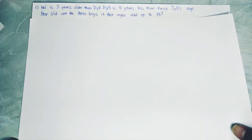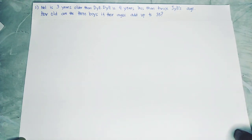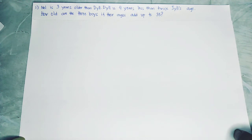Our problem is here. Neil is 3 years older than Dil. Dil is 4 years less than twice Dil's age. How old are the 3 boys if their ages add up to 35?